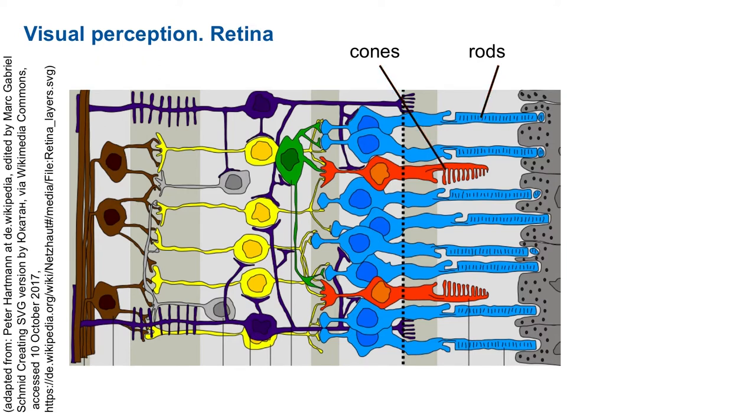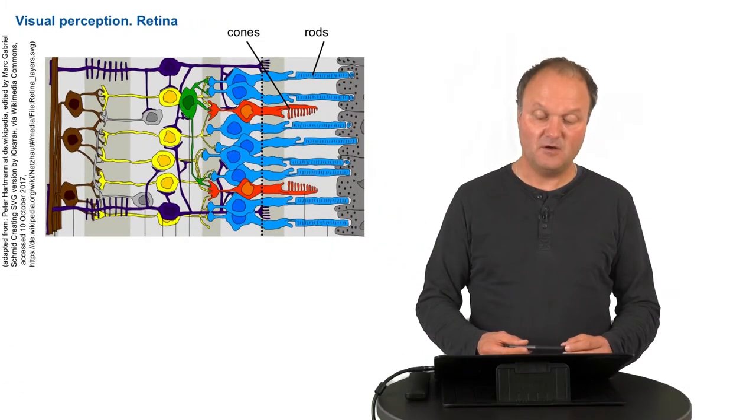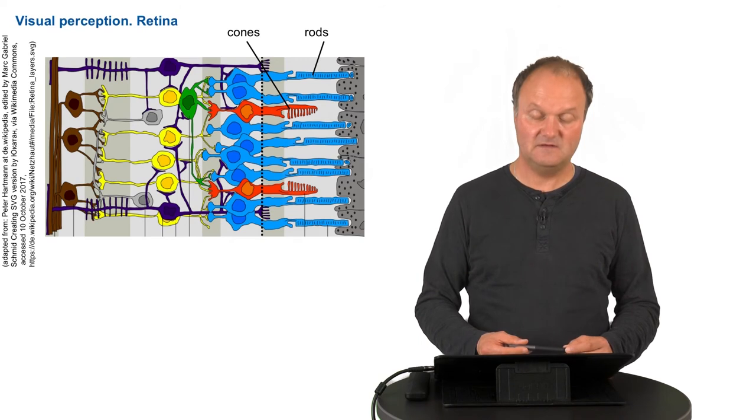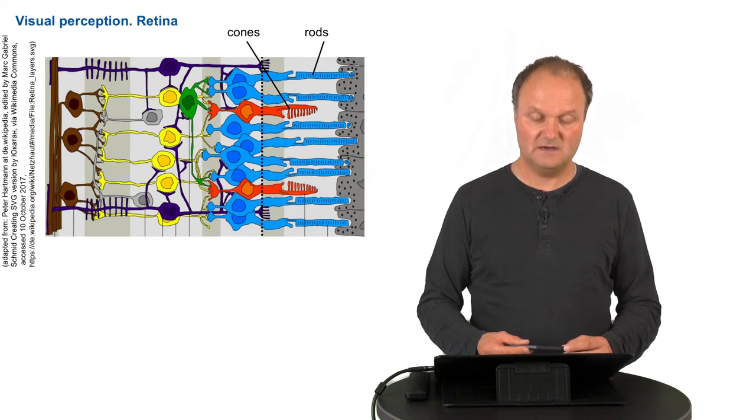There are many more rods than cones. We have approximately one hundred million rods and only about five million cones. The rods are very light sensitive, up to one photon is enough in order to excite them, but they are monochromatic, that is they only react with black-white light distinction. Instead the cones, they are less light sensitive, but there are three different types of cones in three different colors and these help us to perceive color.